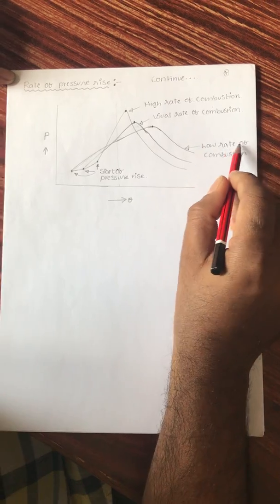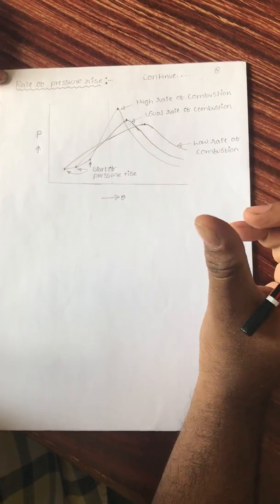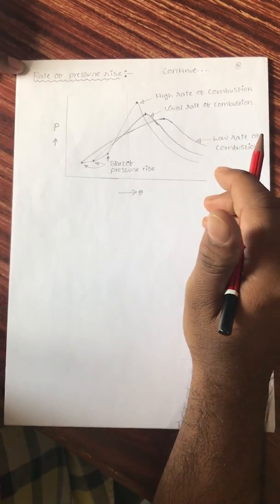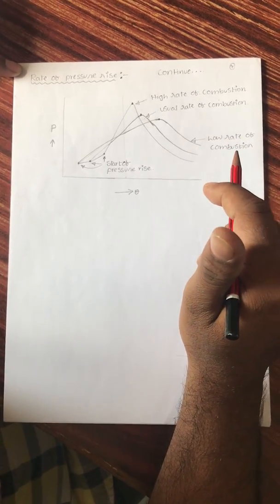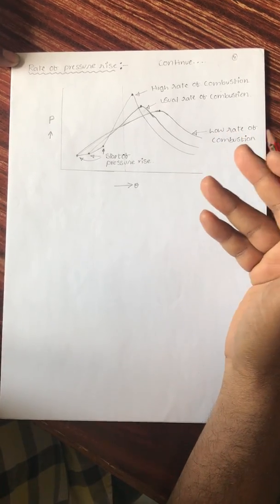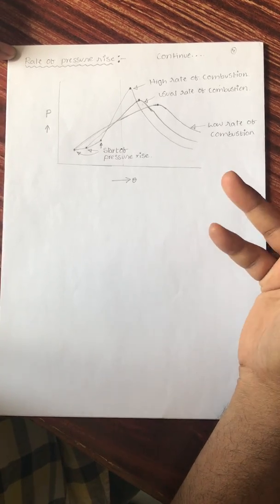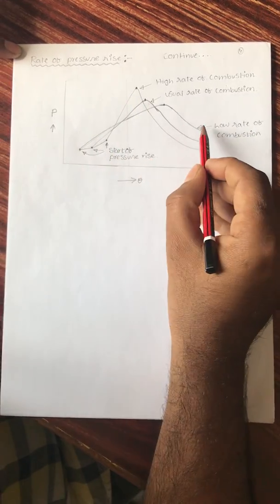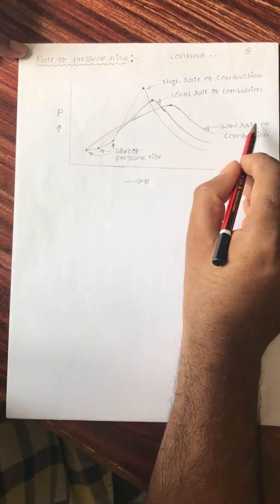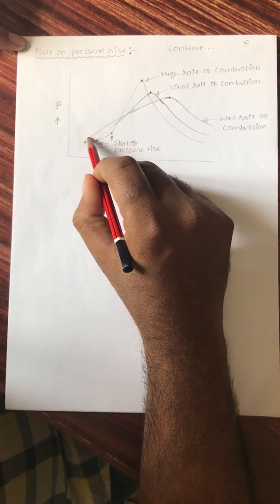If we consider the low rate of combustion, that means with a low compression ratio, the flame travel speed is very low. We get this low flame travel speed when we have less temperature available inside the cylinder. When we have less temperature, we have less pressure, and when we have less compression ratio, the flame speed is less, resulting in a low rate of combustion.